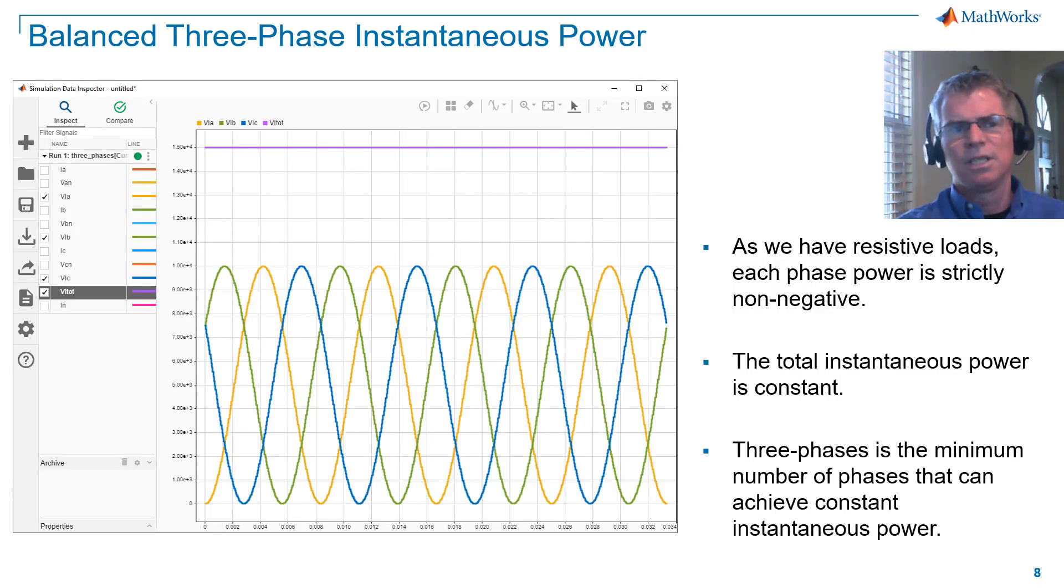As we have resistive loads, each phase power in this case is strictly non-negative. You can see the powers are equal in terms of magnitude and are phase shifted by 120 degrees. The total instantaneous power shown in purple is constant. Three phases is the minimum number of phases that can achieve constant instantaneous power.